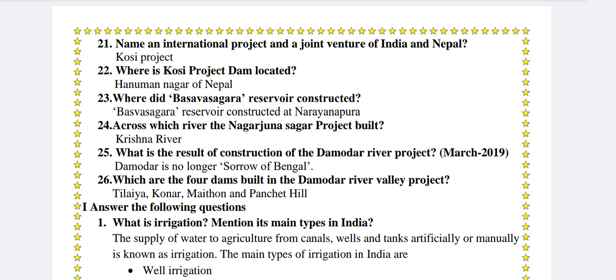Which are the four dams built in the Damodar river valley project? Tilaiya, Konar, Maithon and Panchet Hill.